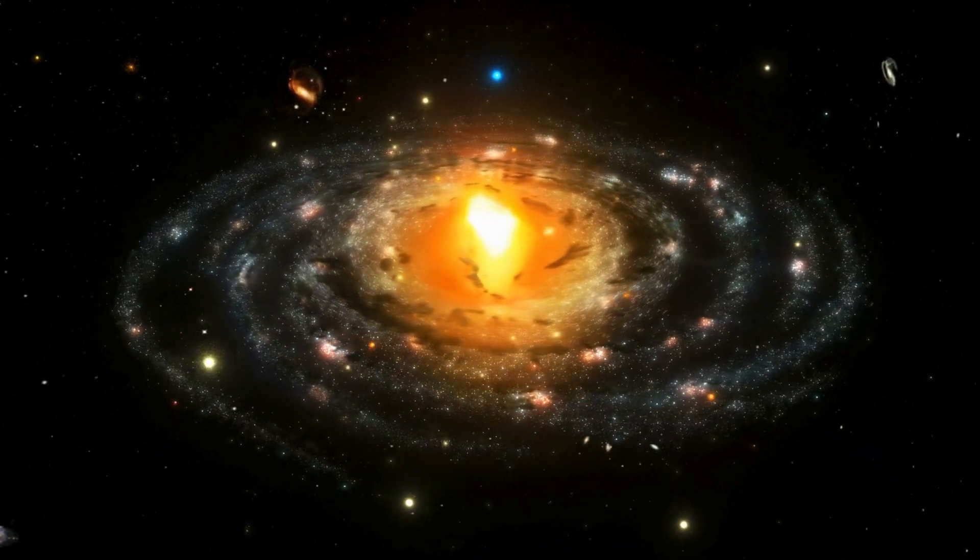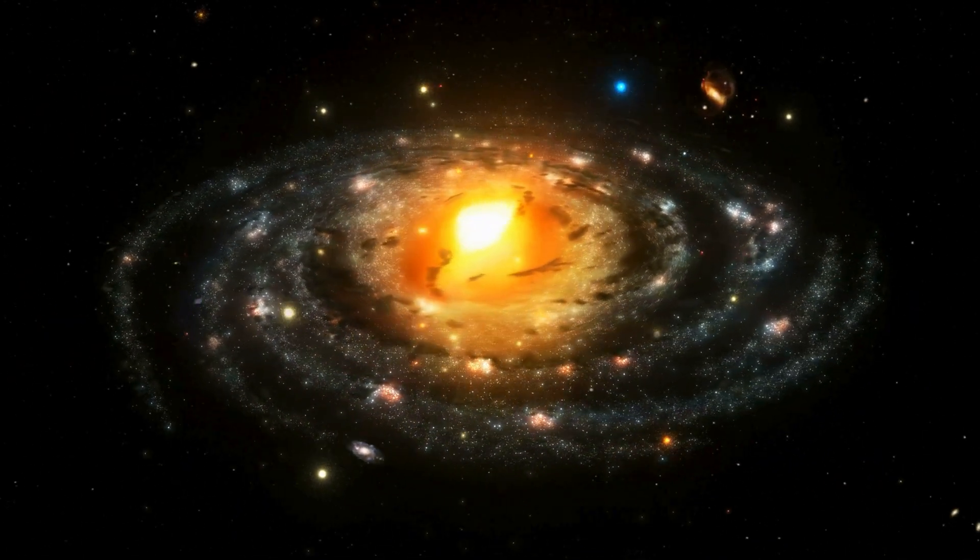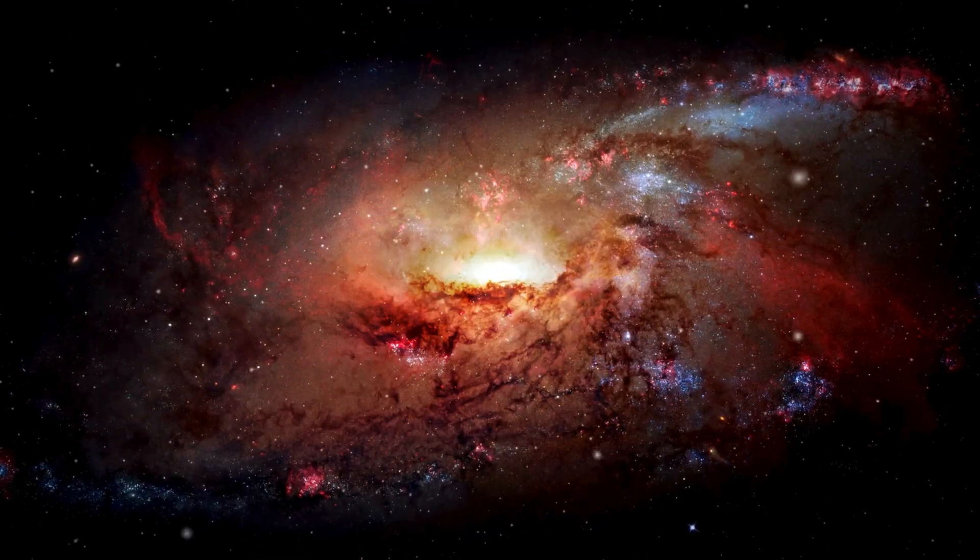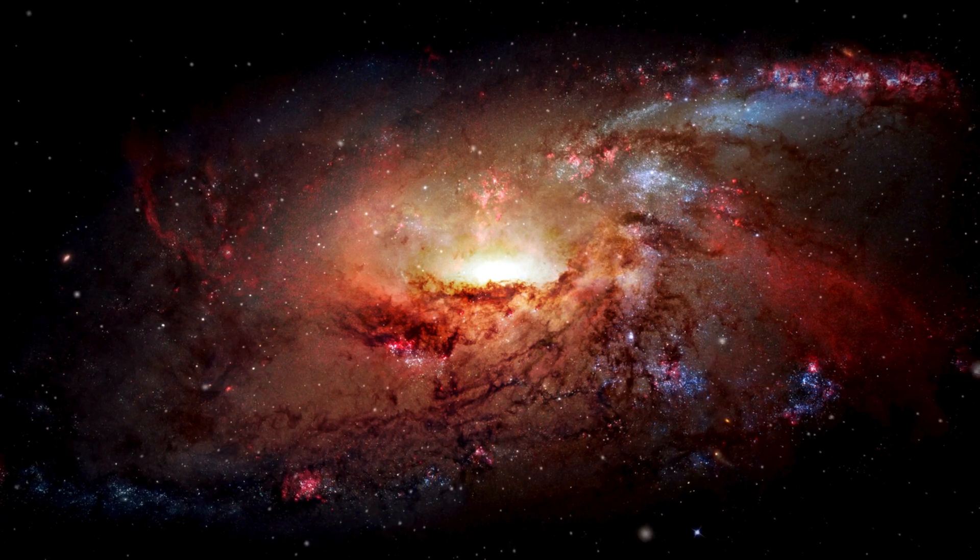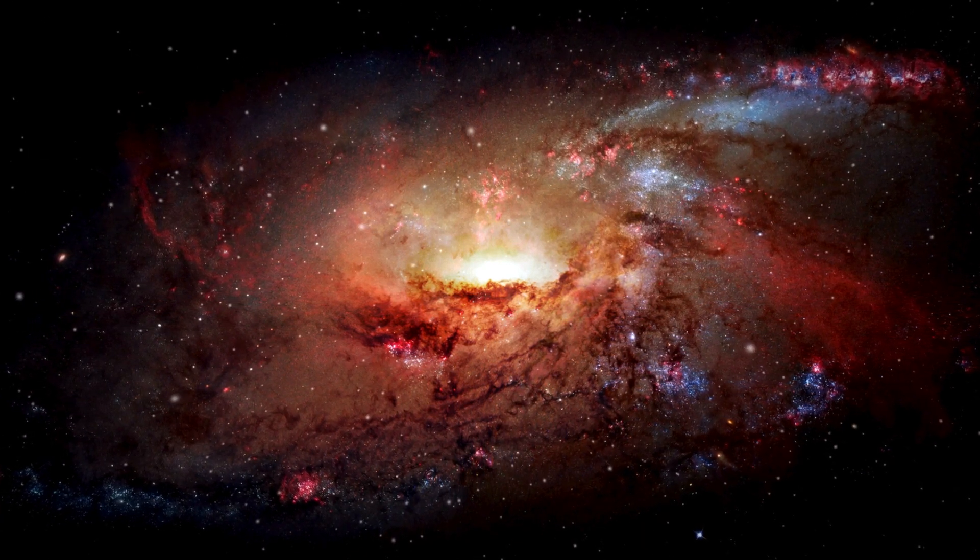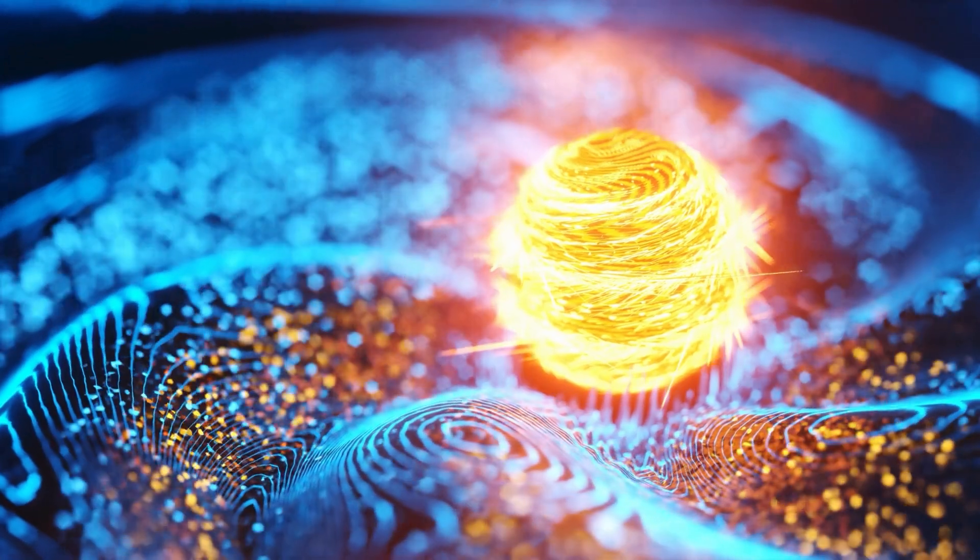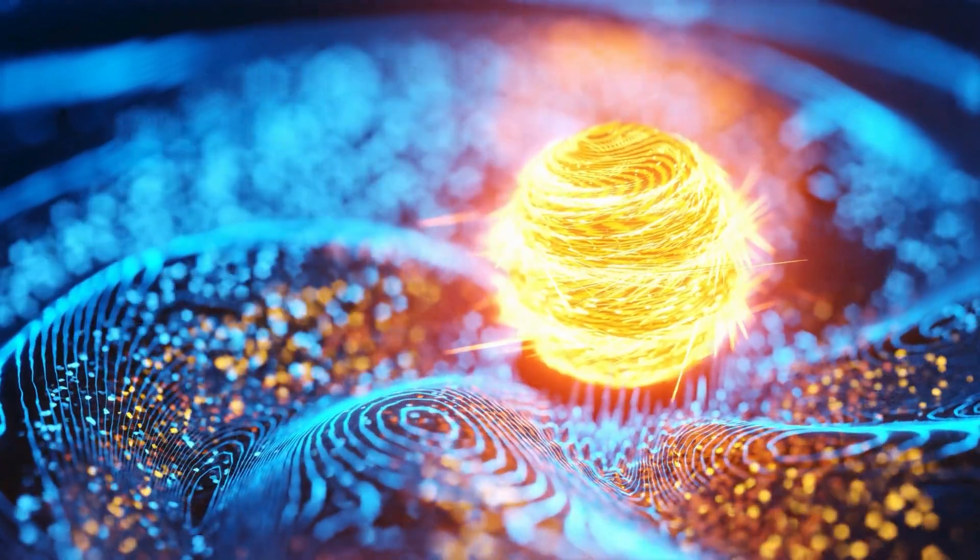Even our own solar system in the Milky Way follows this trend. This surprise tells us that there must be more matter, called dark matter, spread out in a big circle around the galaxy. This dark matter doesn't give off light, so we can't see it directly. We only know it's there because of how things move due to its gravity.